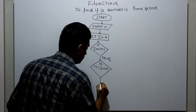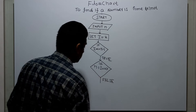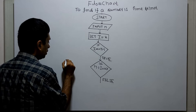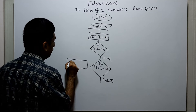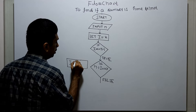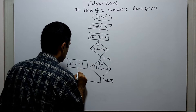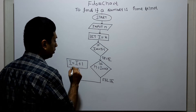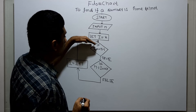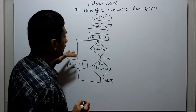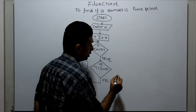If the condition n modulo i equal to zero is false, I am incrementing i by one. Then we come back to the relational statement checking i less than or equal to n minus one. This forms the outer loop.